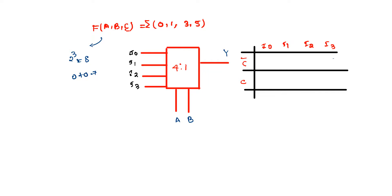You can write even numbers going upward: 0, 2, 4, 6 — and odd numbers going downward: 1, 3, 5, 7. Now, whatever minterm numbers are given in the function, circle those. From the question: 0 is given — circle it; 1 is given — circle it; 2 is not given; 3 is given — circle it; 5 is given — circle it. That's it.